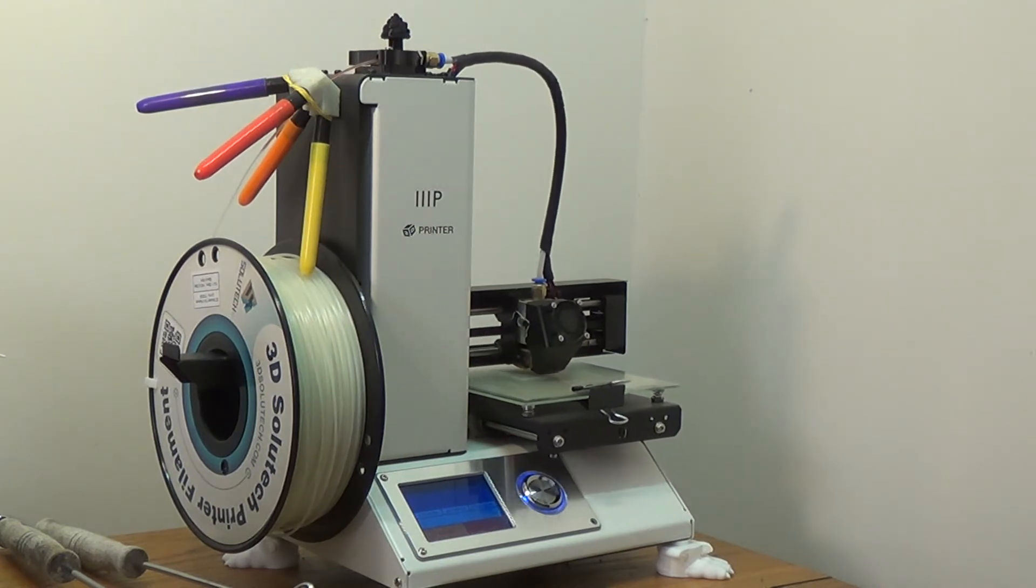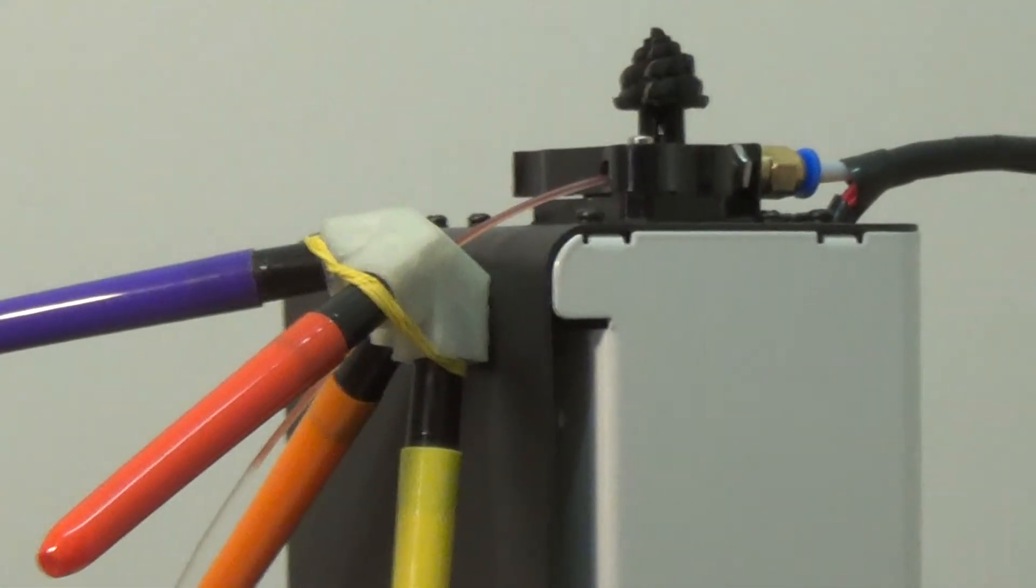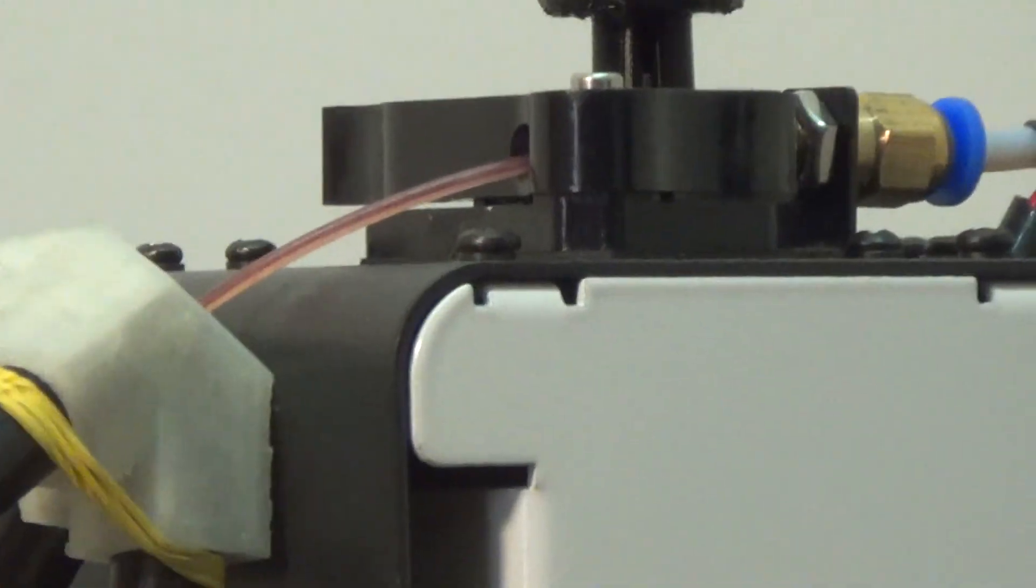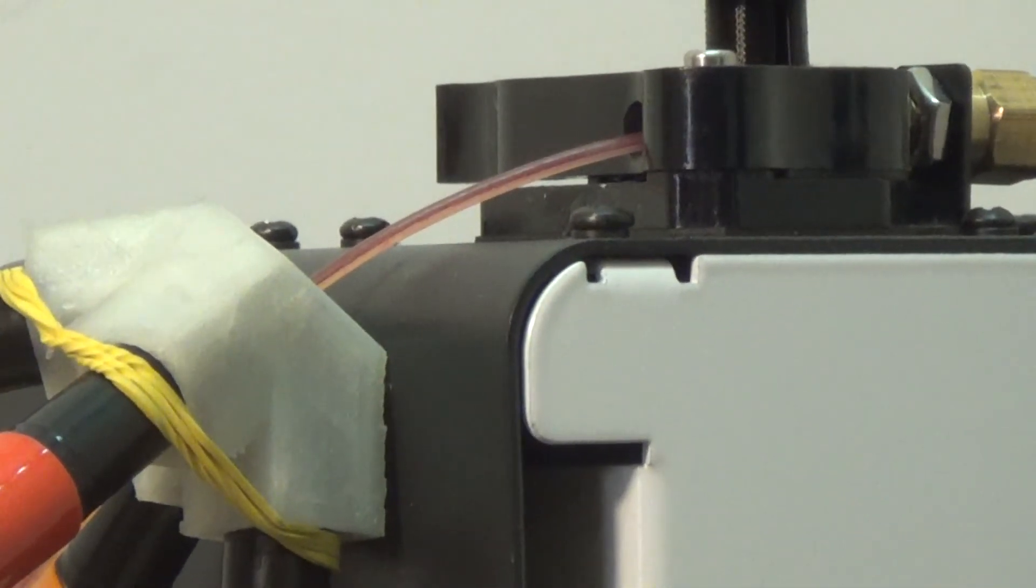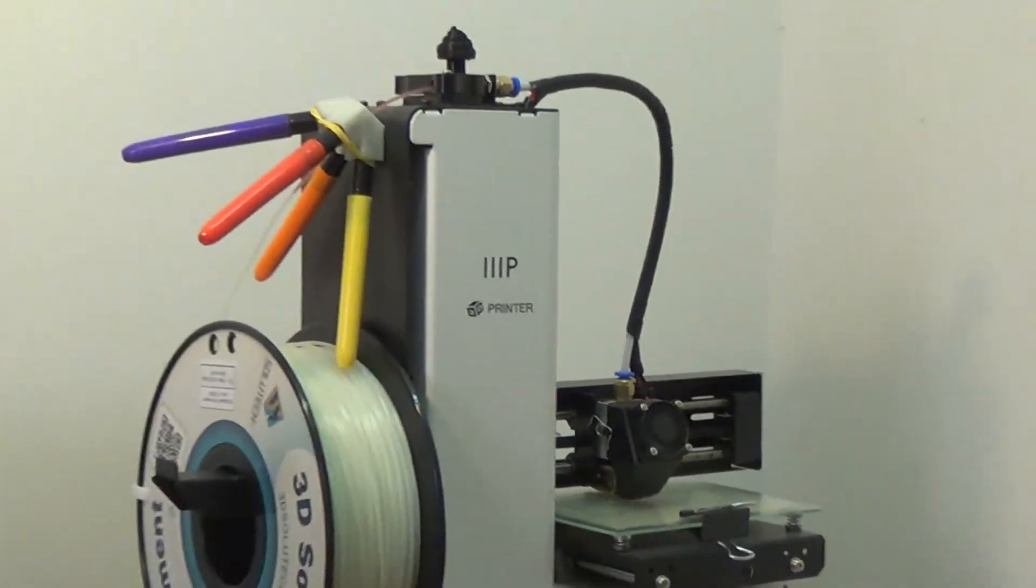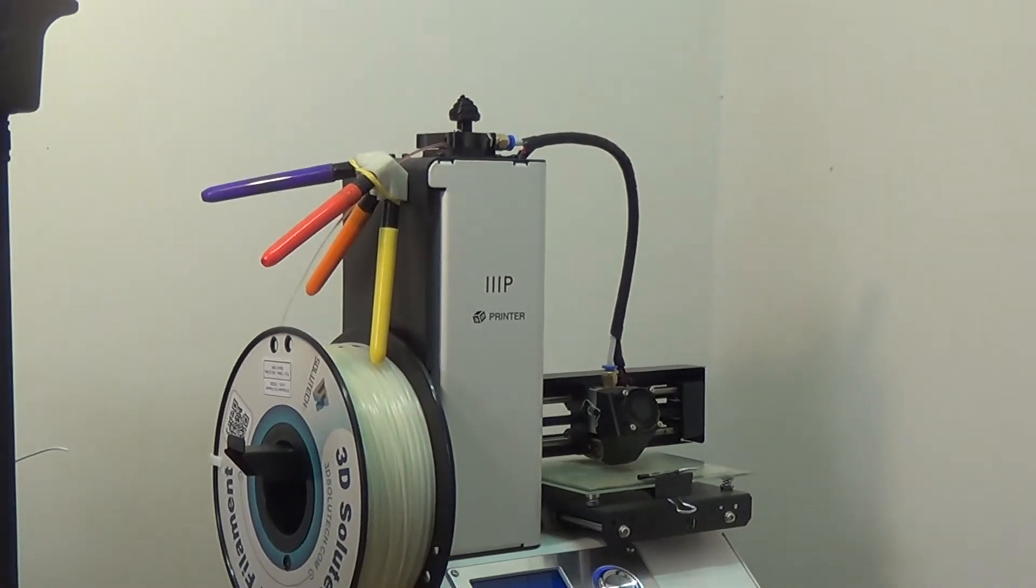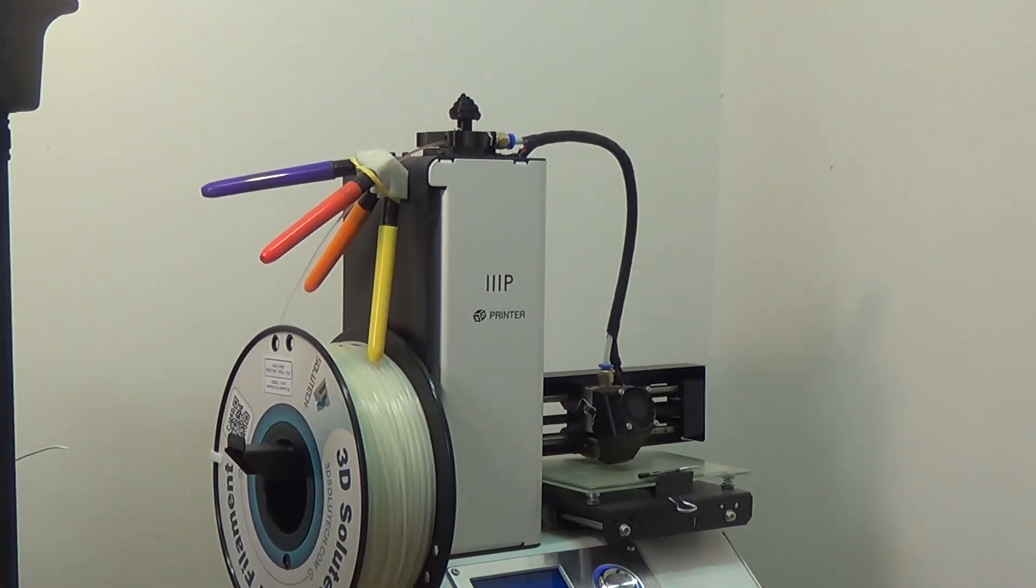Because if you guys can look right there, the filament is not clear anymore. It's more of a red clear rather than the glow-in-the-dark color. So hopefully I'll get it to be a full glow-in-the-dark, kind of like a reddish color. I'll check in with you guys in a few minutes.